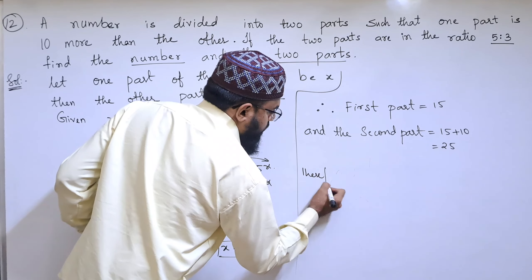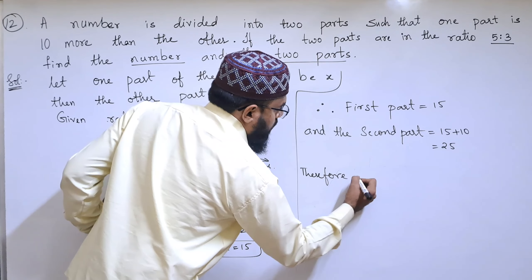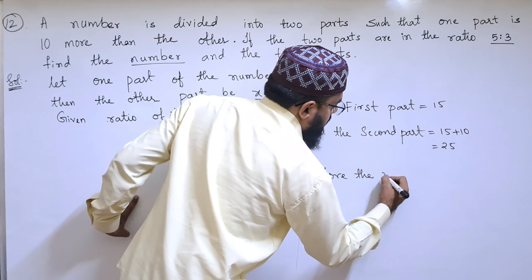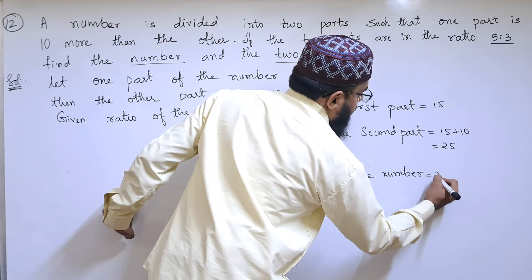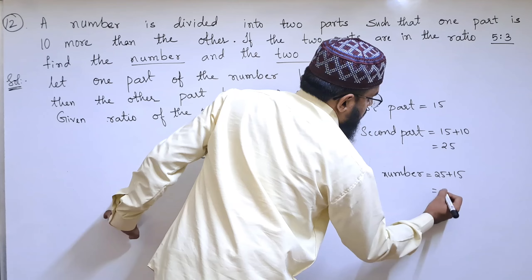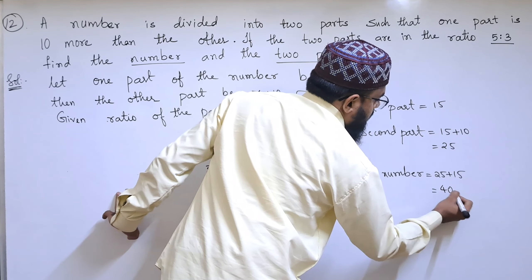Therefore, the number is found by adding these two parts: 25 plus 15, which equals 40.